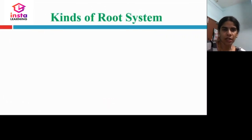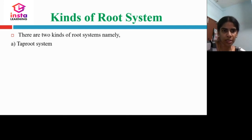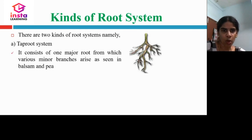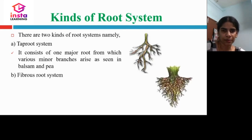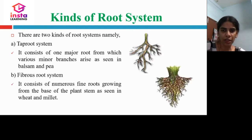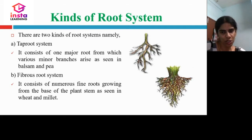There are two kinds of root systems. The tap root system consists of one major root from which various minor branches arise. It is seen in balsam and pea plants. The fibrous root system consists of numerous fine roots growing from the base of the plant stem, and is seen in wheat and millet plants. The tap root system has primary, secondary, and tertiary roots, whereas the fibrous root system does not — it grows as a bunch.